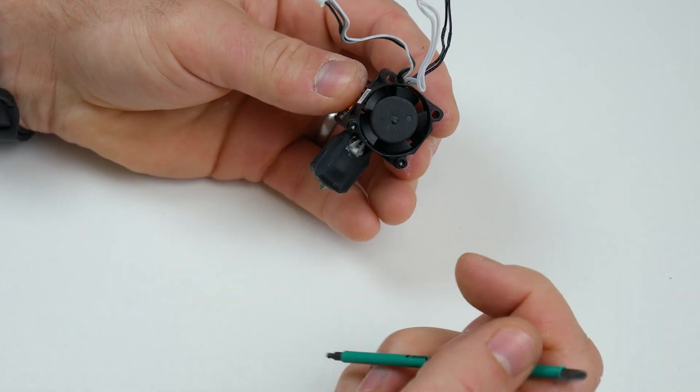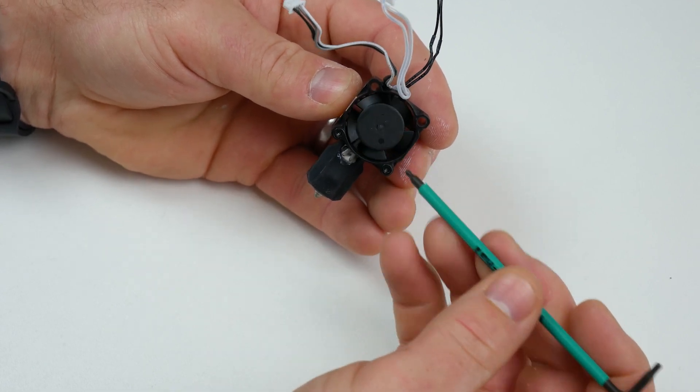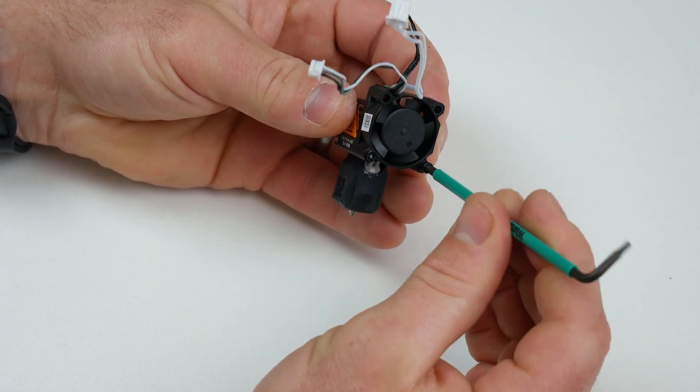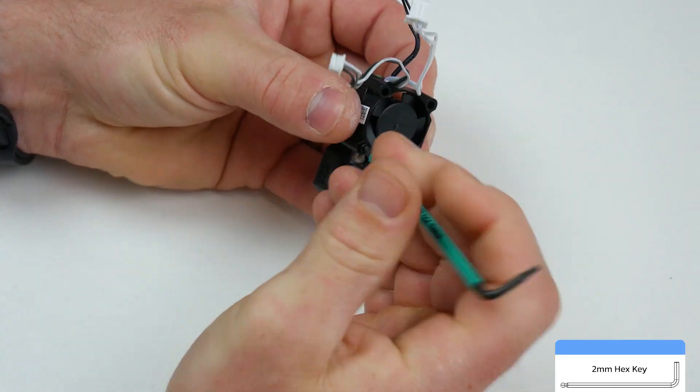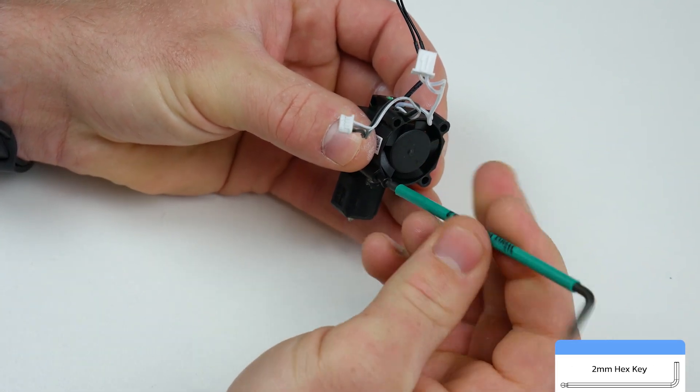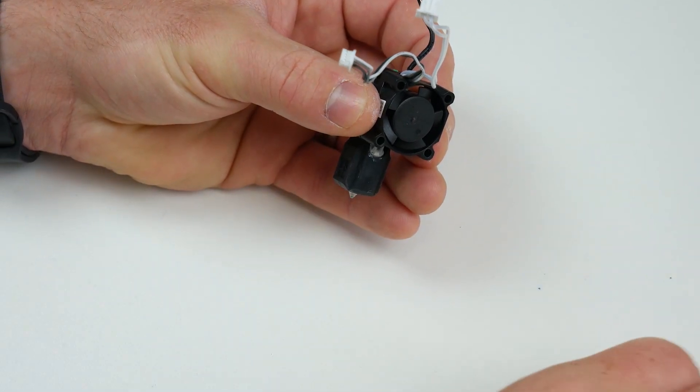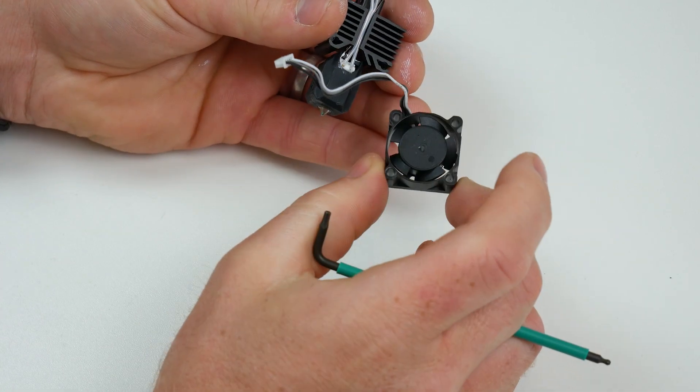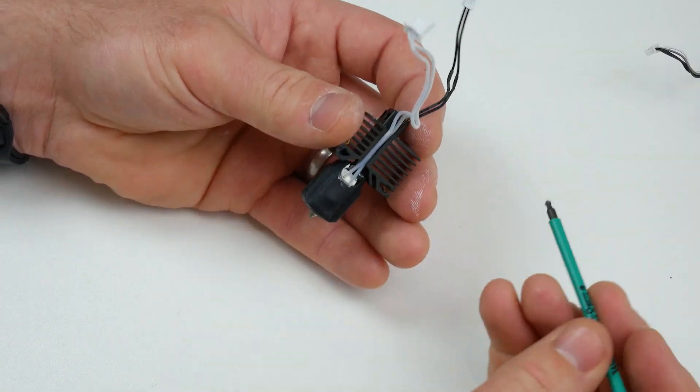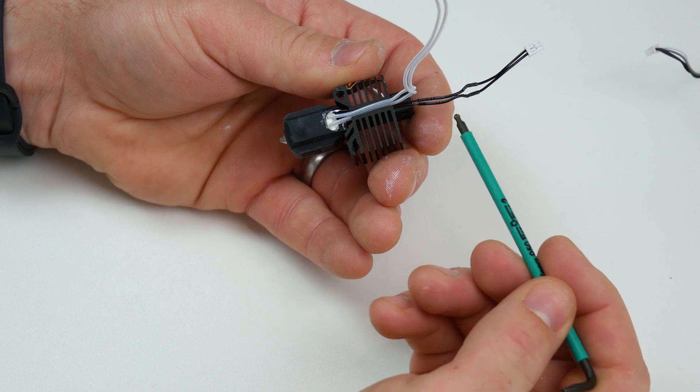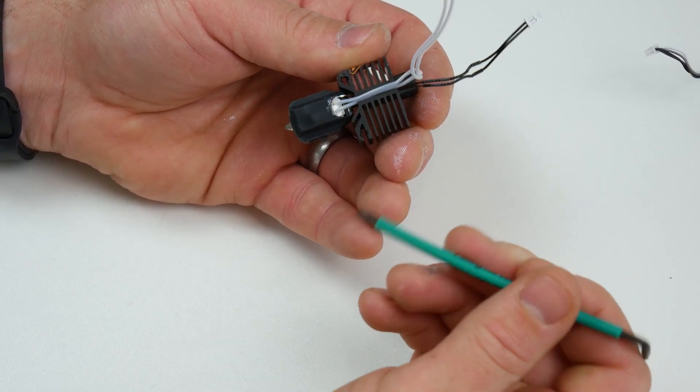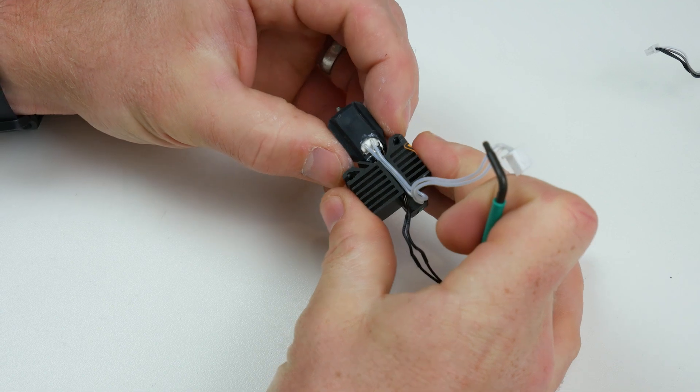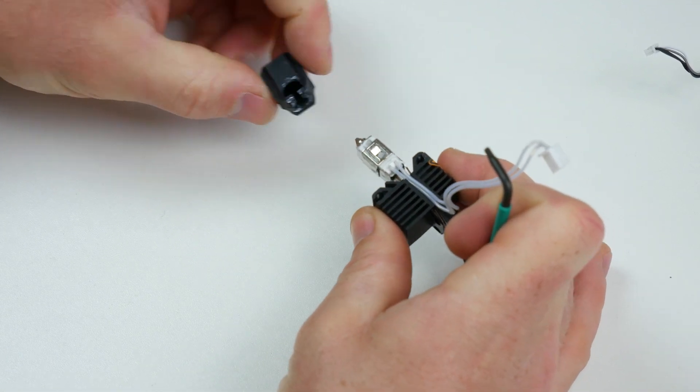So we've now removed our hotend from our printer. The first thing we're going to do is remove the fan. It's done with these two bottom screws down here. Next, we need to make sure that we are removing carefully the temperature sensor and the heating element. The way that we do that is by removing the sock. Just pull that off.